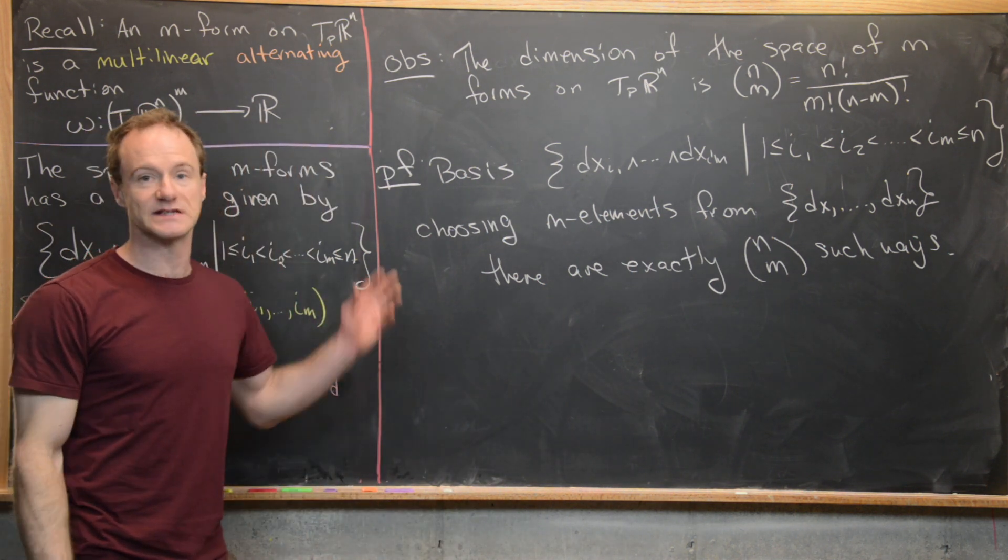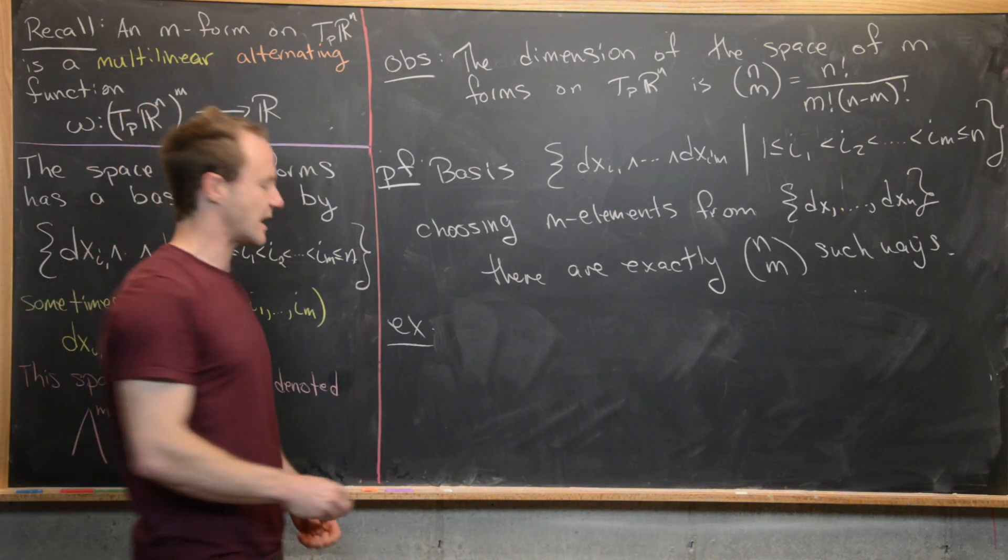And really, that's kind of the end of the proof. There isn't much to this. For our example, we'll notice that there are 6 elementary 2 forms on TPR^4.